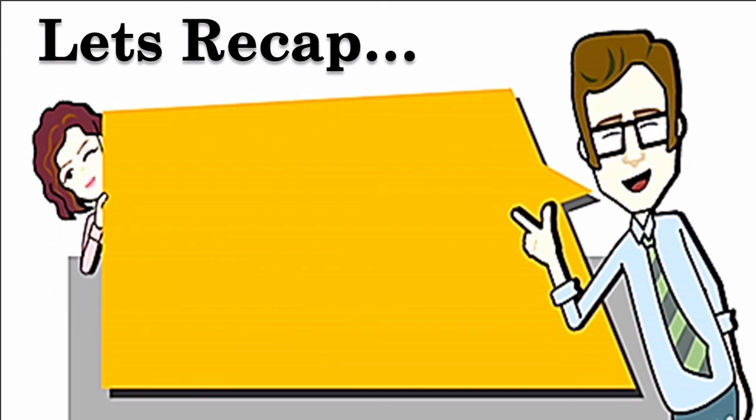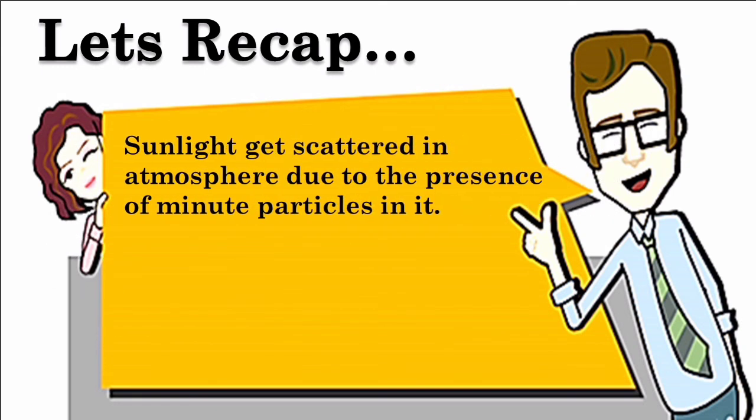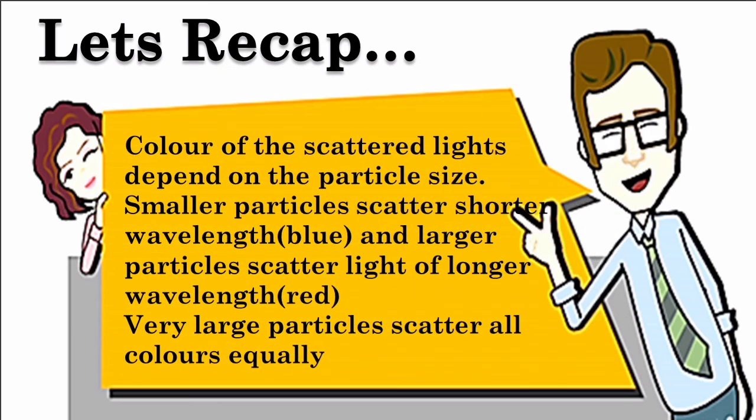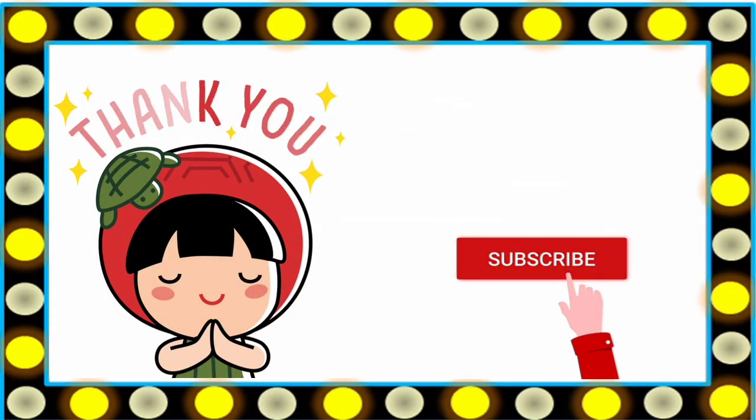In the atmosphere sun's light gets scattered due to the minute particles present in it, and the scattering of light depends on the wavelength of the light. Smaller particles scatter blue light, that is of shorter wavelength, and larger particles scatter longer wavelength of light.